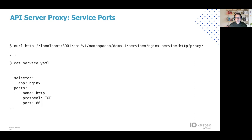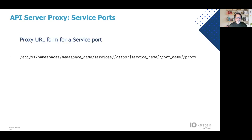In the YAML I showed you earlier, the port has a name — 'http' — and you can see that's the same name that maps in the URL. Here's the full form for that. If you're using an API server proxy and you wish to access a specific service port, this is how you'd go about doing it. Additional URL path parameters can be added onto the end, as well as query parameters.